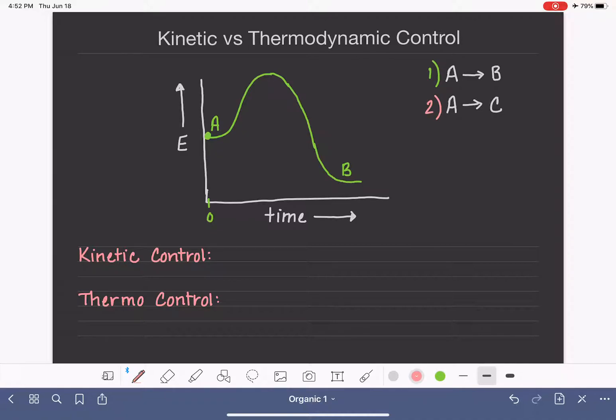So maybe for A goes to C, we'll call this option number two, because A is always going to be starting with the same amount of energy, whether it's running down this pathway or running down this pathway.